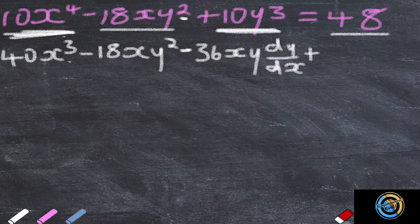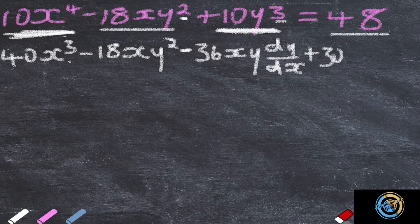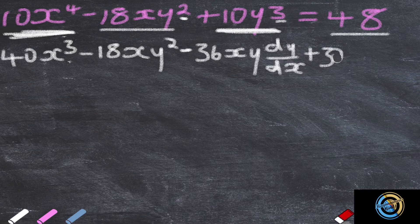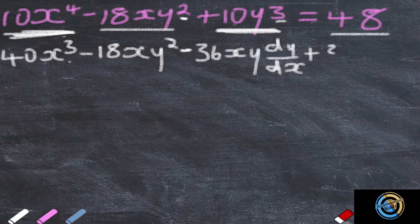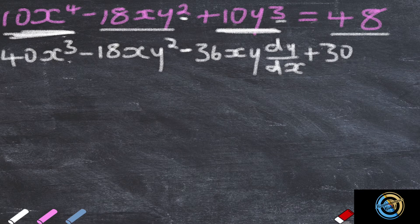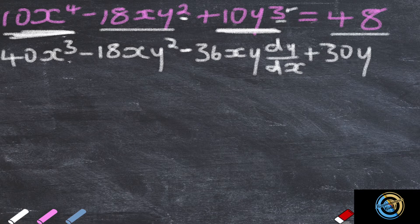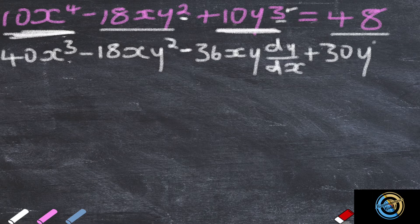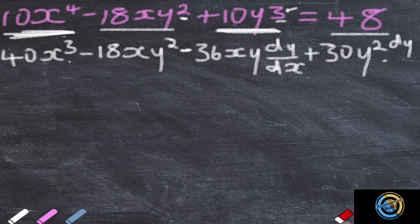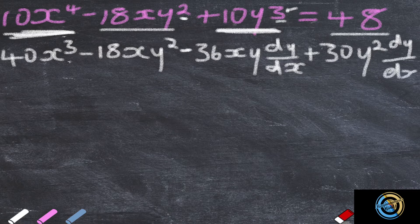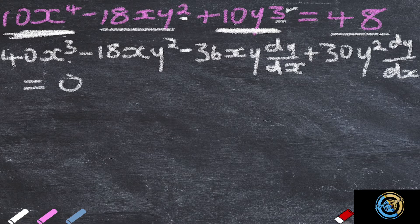Plus, then right here we're going to have 3 times 10, which is 30, times y, and then it's going to be 3 minus 1, which is y squared, dy over dx. All this is equals to zero.